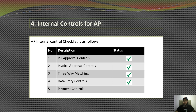The last and very important internal control is payment controls. Before making any payment, a duplicate payment search can help reduce double payments and serve as an additional layer of protection against fraud. First, make sure all issued payments so far are updated into the system before making any new payment.